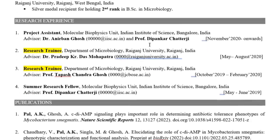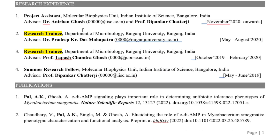The next section is research experience. Here you can mention all the projects you have worked on — it doesn't need to be formal work experience. Research projects done during your bachelor's or master's also count. Include the title, such as 'Project Assistant' or 'Research Training,' the advisor's name and their official university email (not Gmail), the duration, and the institution where you worked.